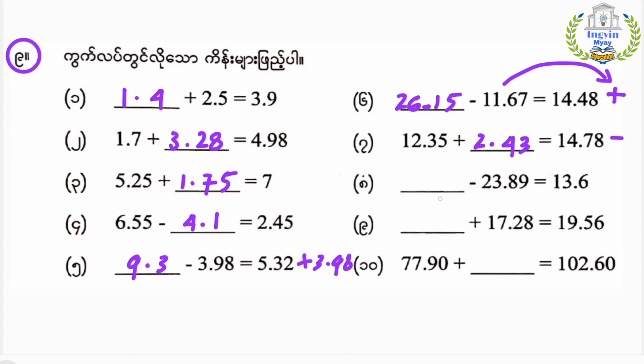Number six: plus minus twenty-three point eight nine equals thirty-three point four. Number seven: plus minus twenty-three point eight nine equals thirty-three point four nine.